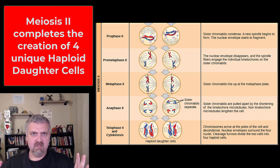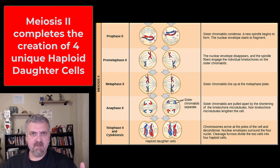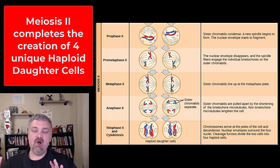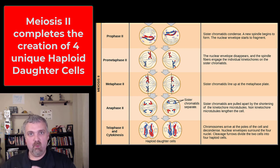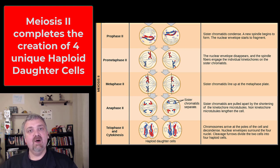With sperm production — we'll learn about this later — all four of these would be sperm when the process is complete. With egg production, only one of them is going to be an oocyte. The other three would be called polar bodies and they would be broken down, because you only need one egg at a time. You need millions and millions of sperm in order for fertilization to take place.